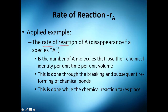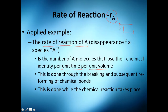The rate of reaction of A — the disappearance of species A — is the number of A molecules that lose their chemical identity per unit time per unit volume. Let's say we choose some space in our system as a volume, and we run it for one second in a volume of one cubic meter.